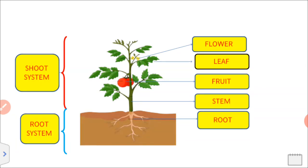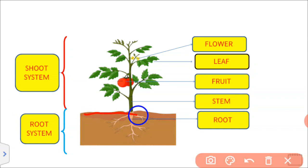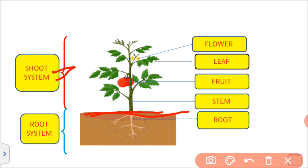What is the root? The part of the plant above the soil is known as the shoot system. In the shoot system, we have the flower, leaf, and stem.